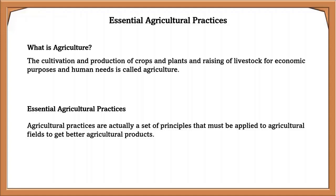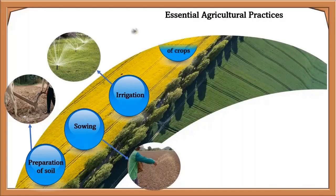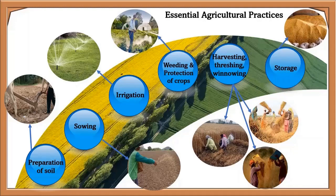Agriculture activities include preparation of soil, sowing, irrigation, protection of crops, harvesting, threshing, winnowing, and storage. Let us see each of these activities in detail.